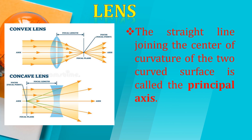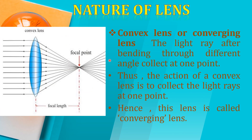There are two types of lenses: convex and concave. Convex lenses are thicker in the middle and thinner at the edges. Concave lenses are thinner in the middle and thicker at the edges. This is how we can identify which is our concave lens and which is our convex lens.